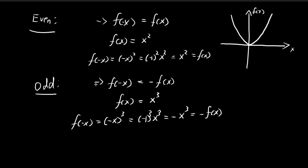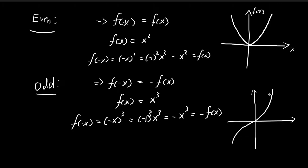So this satisfies the odd function condition. If you graph x³, you can see that the other half is actually just a 180-degree rotation of the half in the region where x is greater than 0. That is what an odd function is.